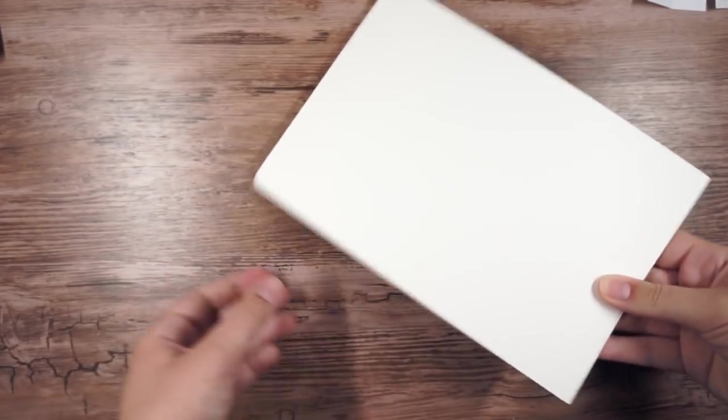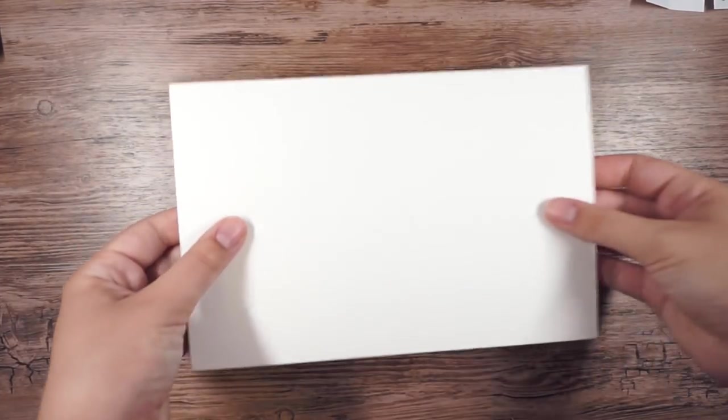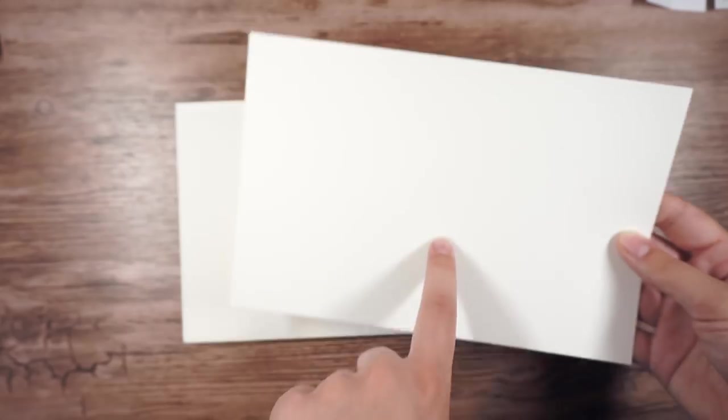I'm going to be using this Bee watercolor paper that I have. I really like the texture of it, and I think I'm going to make the illustrations half the size. I want them to be nice and small so they don't take too long and I can experiment with my watercolors.